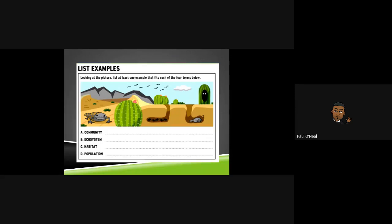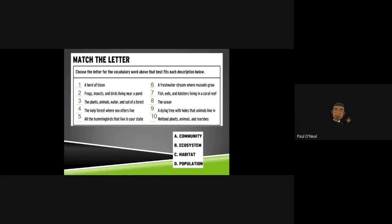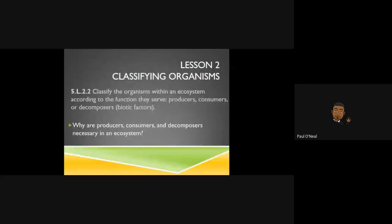Here's another activity you can pause and think about — matching the letter with the number. Choose the vocabulary word — community, ecosystem, habitat, or population — that best fits each description. There are ten of them. Think about it, and let's move on to classifying some organisms.